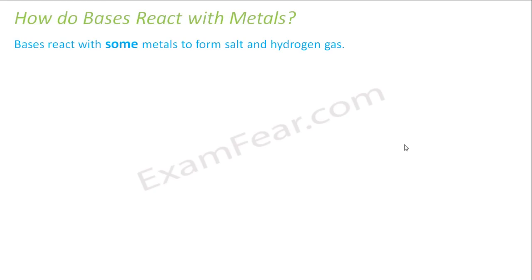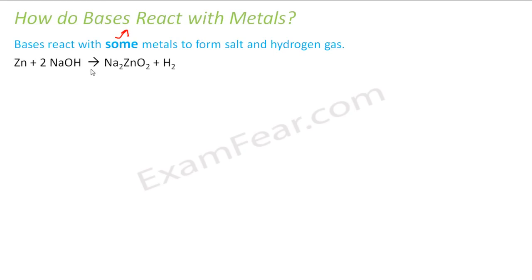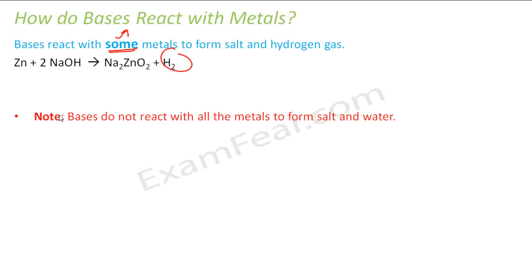Now we will see how base reacts with metal. Please note: base reacts with only some metals — not all metals — to form salt and hydrogen gas. For example, zinc plus sodium hydroxide (NaOH) gives Na₂ZnO₂ plus hydrogen gas.